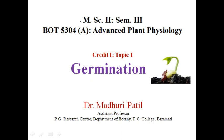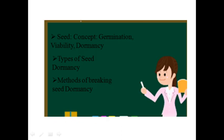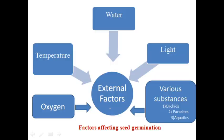Welcome students. In the third lecture of topic germination, what we have studied before: the structure of seed, concept of seed, germination, viability of seed and its dormancy — which again includes types of seed dormancy related to the structure as well as the physiology of seed, and methods of breaking seed dormancy that are natural, morphological as well as physiological. In this lecture, we go for factors affecting seed germination.